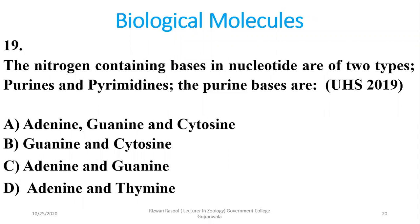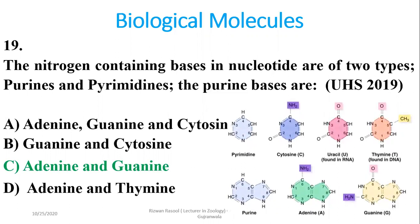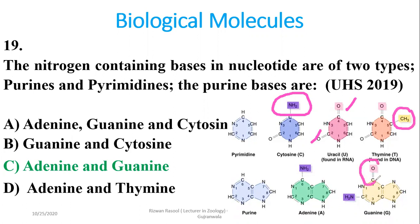Question 19: The nitrogen-containing bases in nucleotides are of two types — purines and pyrimidines. Purines include adenine and guanine, while pyrimidines are cytosine, uracil, and thymine with a single ring. Cytosine is identified with an amino group; uracil with two carbonyls; thymine with a methyl group; guanine with a carbonyl plus amino group; and adenine with only an amino group in a double-ring base.